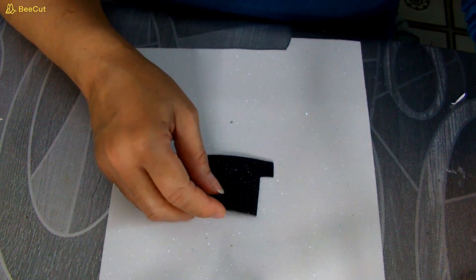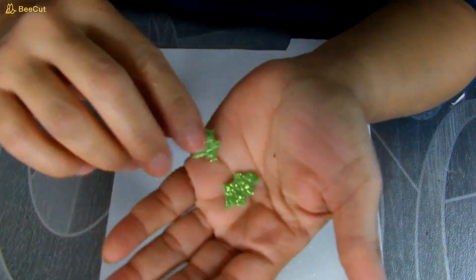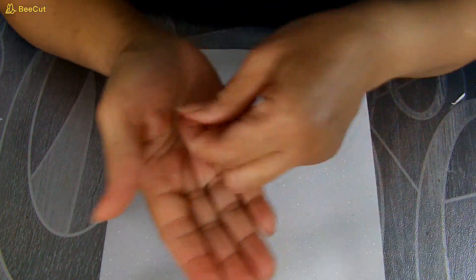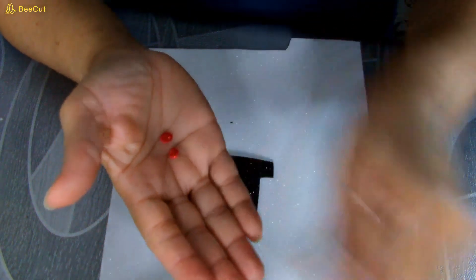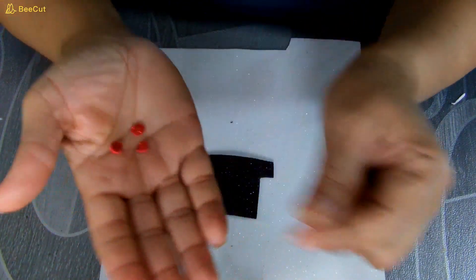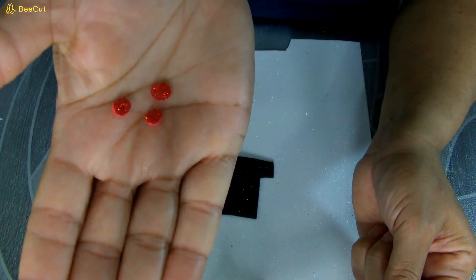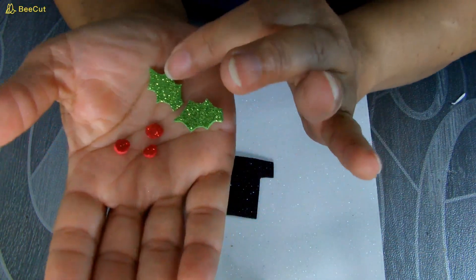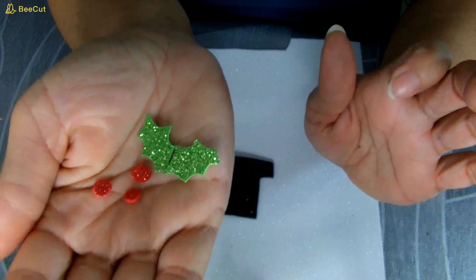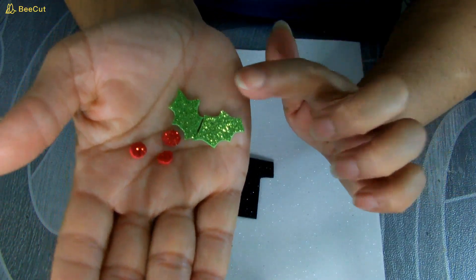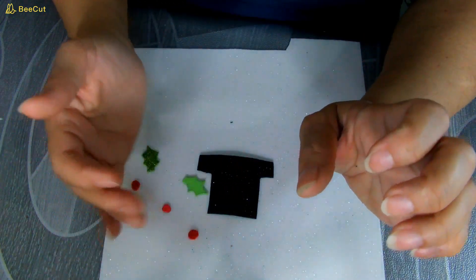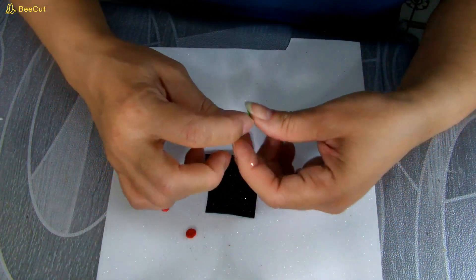Decorarlo. Yo corté aquí unas hojitas verdes y hice unos circulitos con foami rojo escarchado. También como es navideño le voy a poner esa decoración. Dos hojitas navideñas y tres circulitos rojo formando como cerecita, algo así. Y esto lo voy a estar poniendo aquí en el sombrero.